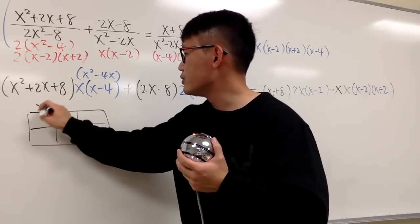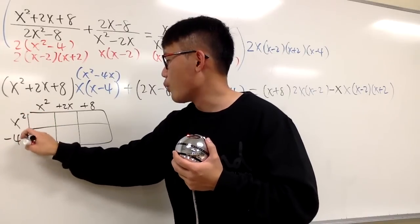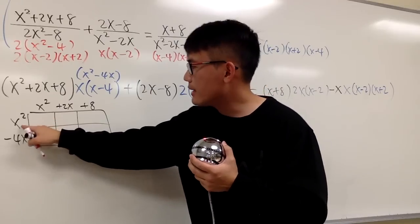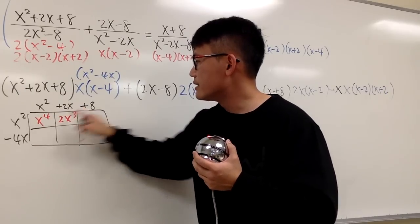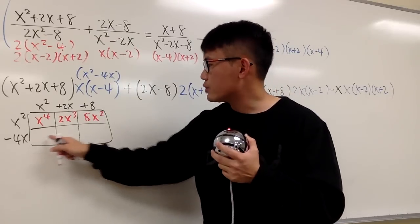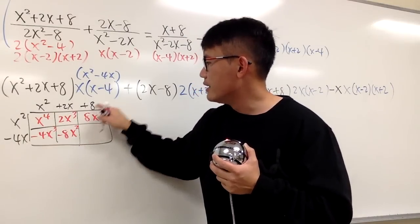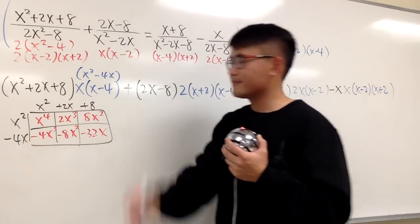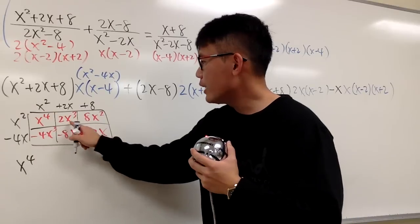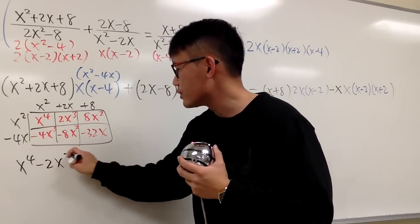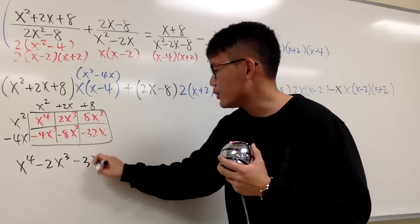So let me just draw the box right here. And let me put down this on the top, which is x squared plus 2x plus 8. And let me put this on the side right here: x squared minus 4x. This is going to be x squared times x squared, we will have x to the fourth power. And this times that, we will get 2x to the third power. This times that is 8x squared. And then for the next row, x squared times this is negative 4x to the third power. This times that is negative 8x squared. This times that is negative 32x. So right here, we will have x to the fourth power. Then we combine: 2x³ minus 4x³ gives us negative 2x to the third power. And 8x² minus 8x² is zero — they cancel out. And this right here is negative 32x.